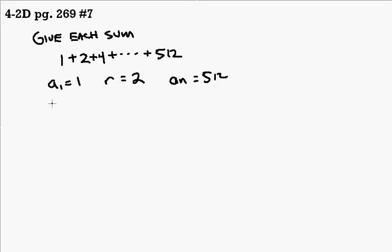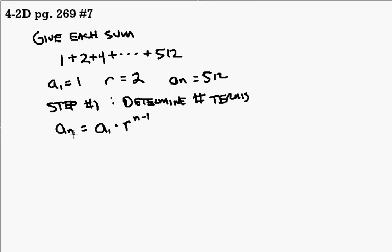Step 1, find the number of terms. Step number 1, determine number of terms. We do this by using our geometric sequence formula. a sub n is equal to a sub 1 times the ratio raised to the n minus 1 power. Our a sub n is 512. Our a sub 1 is 1. Our common ratio is 2 to the n minus 1.